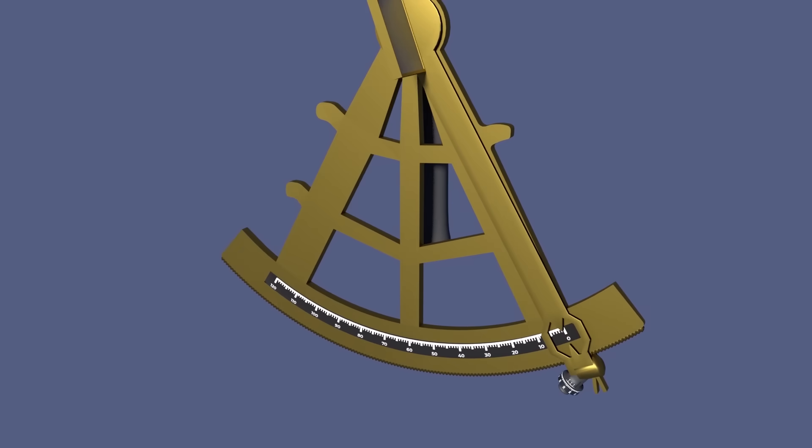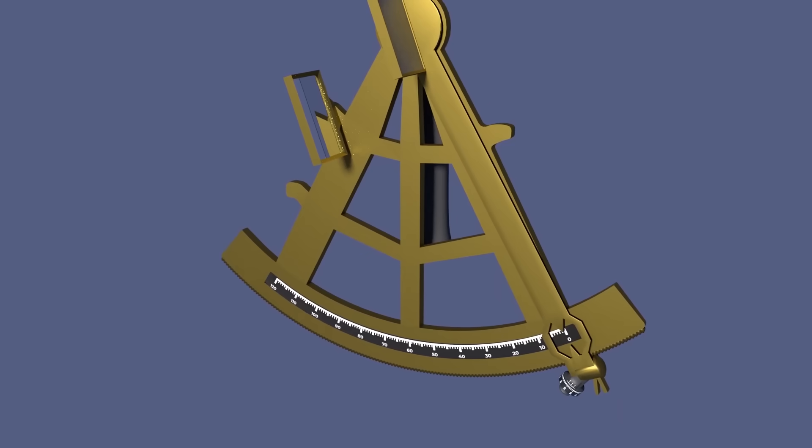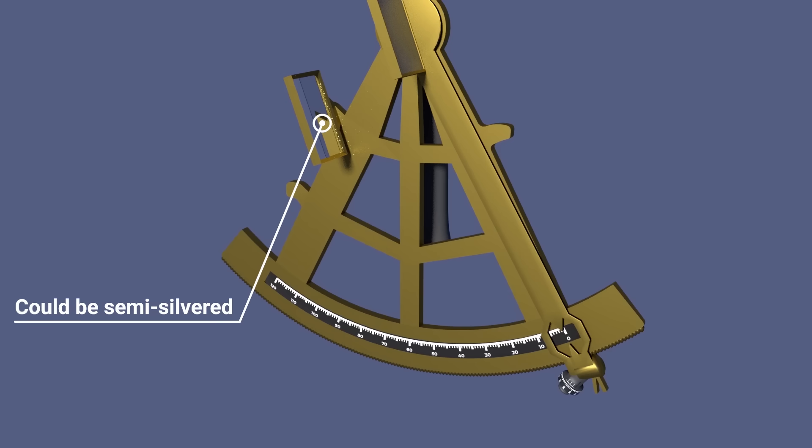The second mirror is the horizon mirror, and it's attached rigidly to the frame. You can see that this mirror is part mirror and part see-through. This is because you need to be able to see both the horizon straight ahead, and the reflection of the celestial body that you're trying to measure, and this will become clear again in video 3 when we're actually taking measurements. Some sextants will have a semi-silvered mirror instead, and this makes the sextant a little easier to use, but it increases the cost.